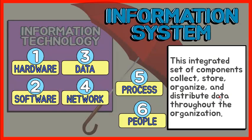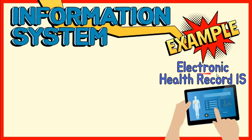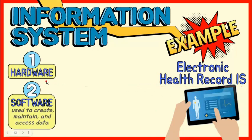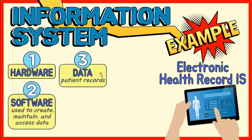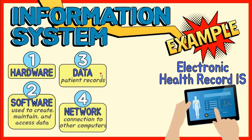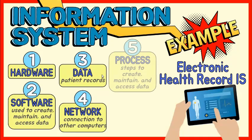Here's an example of an information system — this is called an electronic health record information system. It has hardware and software that can be used to create, maintain, and access data. This may include computers, hard drives, and other electronic devices, device drivers, and applications used to store, keep, and distribute patient records. The data are the details of patients and their health records. This collection of facts can be retrieved from a database that could be connected to and accessed by another computer. Proper steps are followed to input, process, and use information provided in the information system.